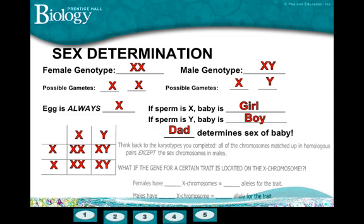What if the gene for a certain trait was actually located on the X chromosome? Females have two X chromosomes, meaning they inherit two alleles for the trait. But males only have one X chromosome, so they only inherit one allele for the trait. Think about what impact that has on inheritance for boys. If they receive the dominant allele, they'll have the dominant trait. If they receive a recessive allele, they'll have the recessive trait.